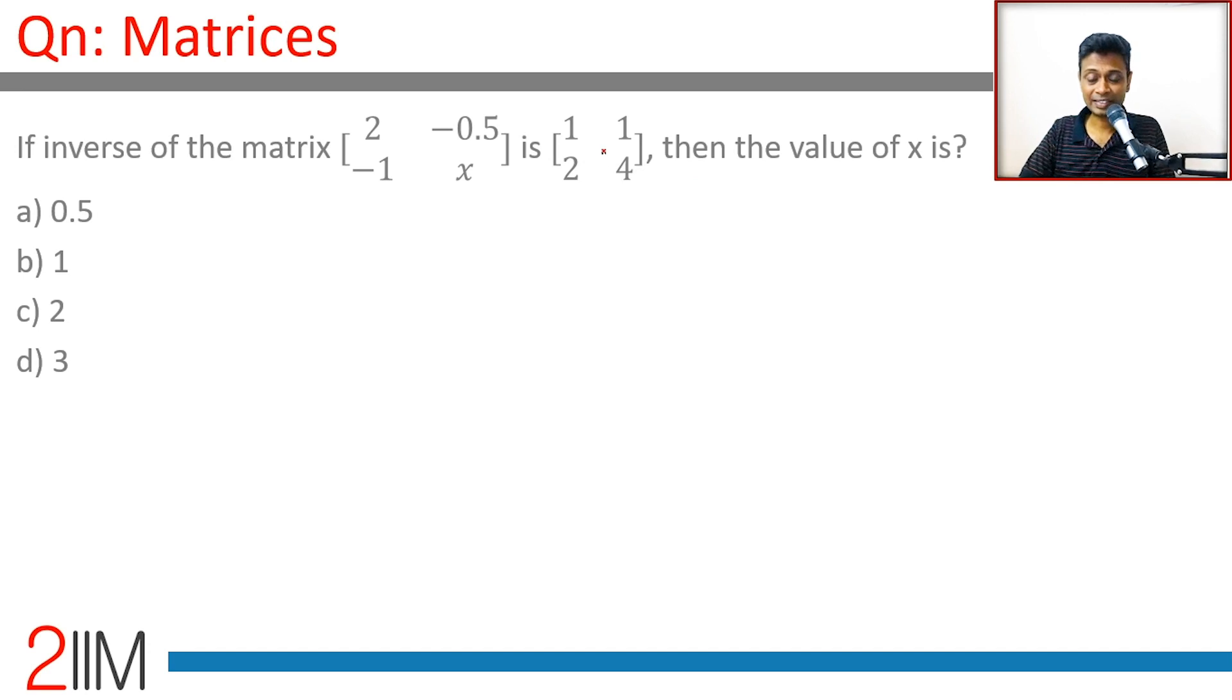The inverse of the matrix is this, so if you multiply this with this we should get the identity matrix. Quite simple. So if you multiply this with this, the first row first column is going to be...